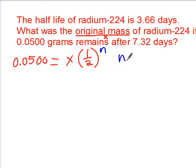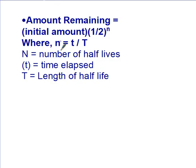To calculate n, it's little t divided by big T. Let me double check that. Yep, little t, big T. Little t is time elapsed. Big T is length of half-life.